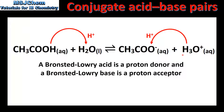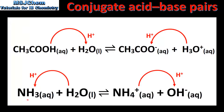So in the reverse reaction the hydronium ion is acting as a Bronsted-Lowry acid and the ethanoate ion is acting as a Bronsted-Lowry base. We also looked at this reaction in which ammonia reacts with water to form the ammonium ion and the hydroxide ion. In the forward reaction the water is donating a proton to ammonia, so the water molecule is acting as a Bronsted-Lowry acid and the ammonia is acting as a Bronsted-Lowry base.